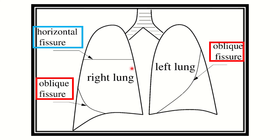The left lung has only the oblique fissure — the left lung has no horizontal fissure. So the right lung has two fissures and the left lung has only one fissure. This one picture is enough to answer the question, as it is a short and easy question.